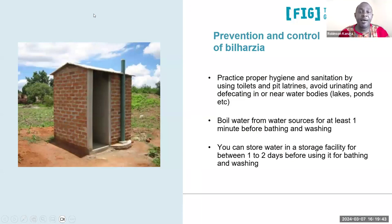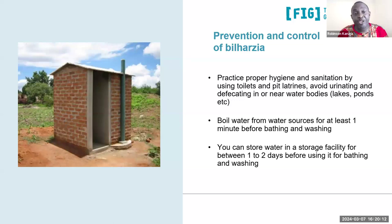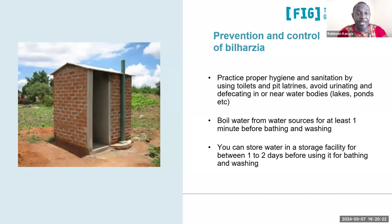Additional ways to prevent and control bilharzia include: ensuring proper hygiene and sanitation by encouraging communities to use toilets and pit latrines, and avoid open defecation or urination — since eggs end up in freshwater bodies and keep the life cycle going. Communities can also boil water before use for bathing or washing, or alternatively store water in adequate sunlight for about a day or two before using it.